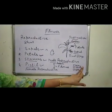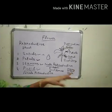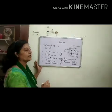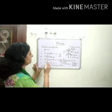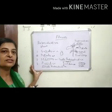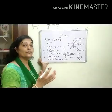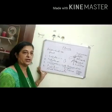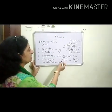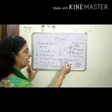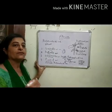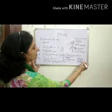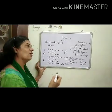Ovules are found inside the ovary. So these are the main parts of a flower: sepals, which protect the flower in its bud stage; petals, which help in the process of pollination and are the colorful and attractive part; stamens, the male reproductive part with two parts — filament and anther; and pistil, the female reproductive part consisting of style, stigma, ovary, and ovules.